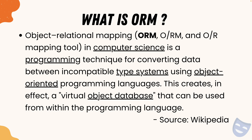Object Relational Mapping, or ORM, in computer science is a programming technique for converting data between incompatible type systems using object-oriented programming languages. This creates, in effect, a virtual object database that can be used from within the programming language — acting like a proxy between your code and the database, allowing you to query and perform all CRUD operations from the code itself. That is the real power of ORM.